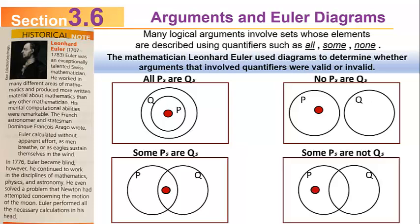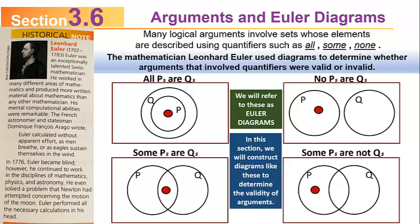A representative element of P in the lower left diagram would also be an element of Q, illustrating 'some P's are Q's,' whereas in the lower right diagram, the representative element of set P is not in Q, illustrating 'some P's are not Q's.' We're going to refer to these as Euler diagrams. In this section, we'll construct diagrams like these to determine the validity of arguments.